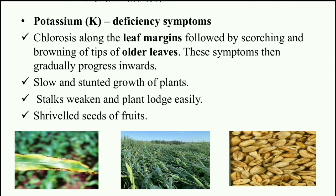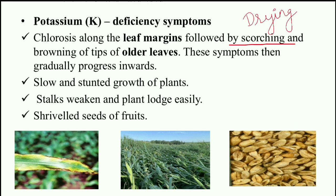Finally, we discuss the deficiency of potassium. The leaves will start to show yellow margins, followed by scorching and drying of leaf edges. In severe conditions, browning appears before the yellowing effect, and these symptoms gradually progress through the leaves. Since potassium helps prevent lodging, if potassium decreases then the stalk becomes weak and plants lodge easily.